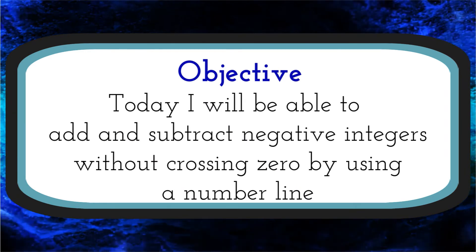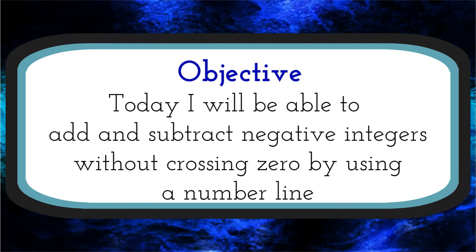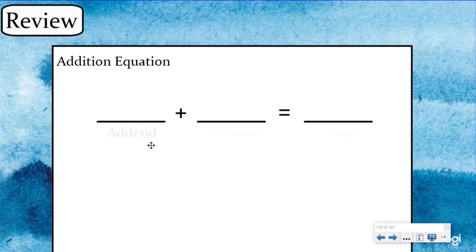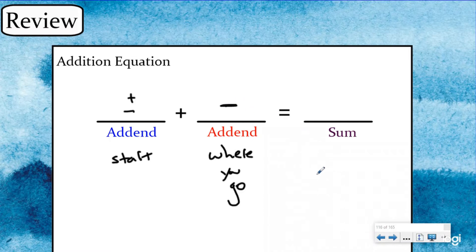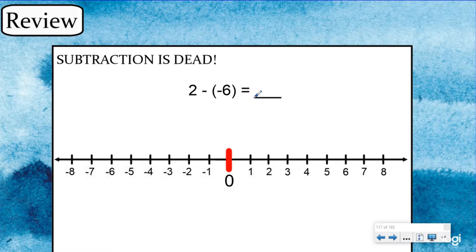So last lesson we were adding and subtracting positive integers. Today we're going to be taking the next step in doing negative integers. Just to review: we have our two addends and then we have our sum — you can have more than two addends. Addends are just the pieces of an addition equation and the sum is the total. The first addend is where you start on the number line, and the second addend is where you go. Last lesson we were adding a positive, but today we're going to be adding a negative number. We'll focus on the conceptual understanding — in later lessons we'll teach you the shortcut.